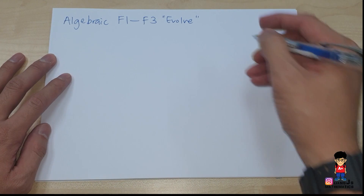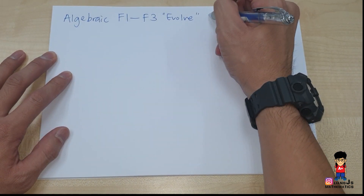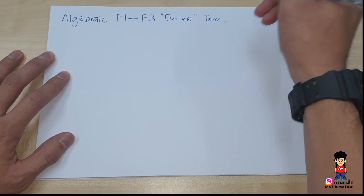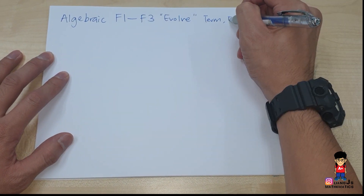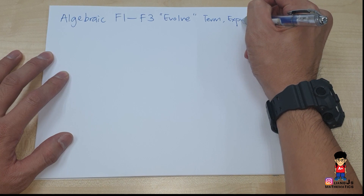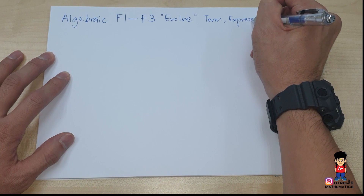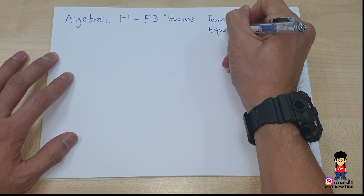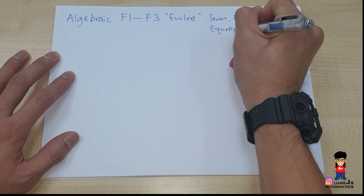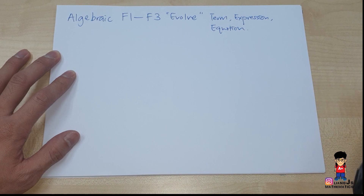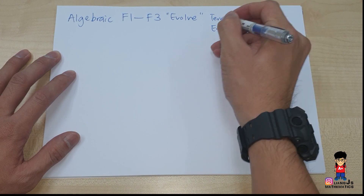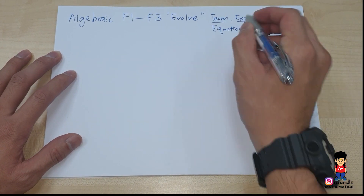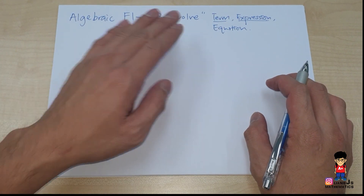Number one, we talk about this word called 'term.' After that we talk about this word called 'expression,' and then finally we come into this word called 'equation.' Our main focus is to understand these three particular words first.